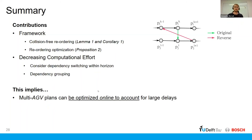So in more generic terms, what this means is that we can optimize multi-AGV plans online to account for large delays without anticipating them a priori. And this also means that we can use the global plan less in unpredictable environments.